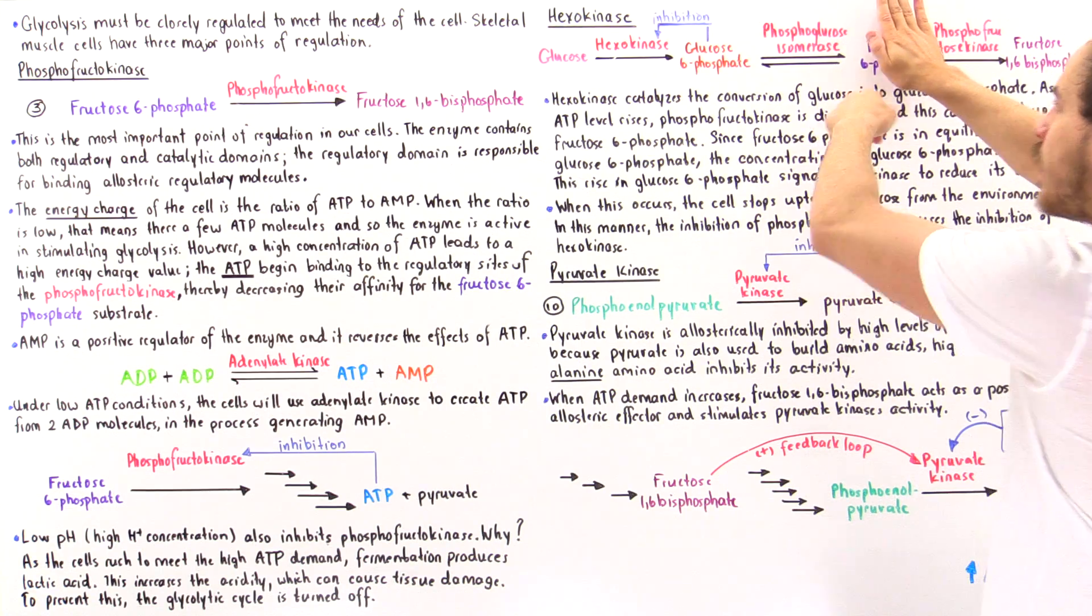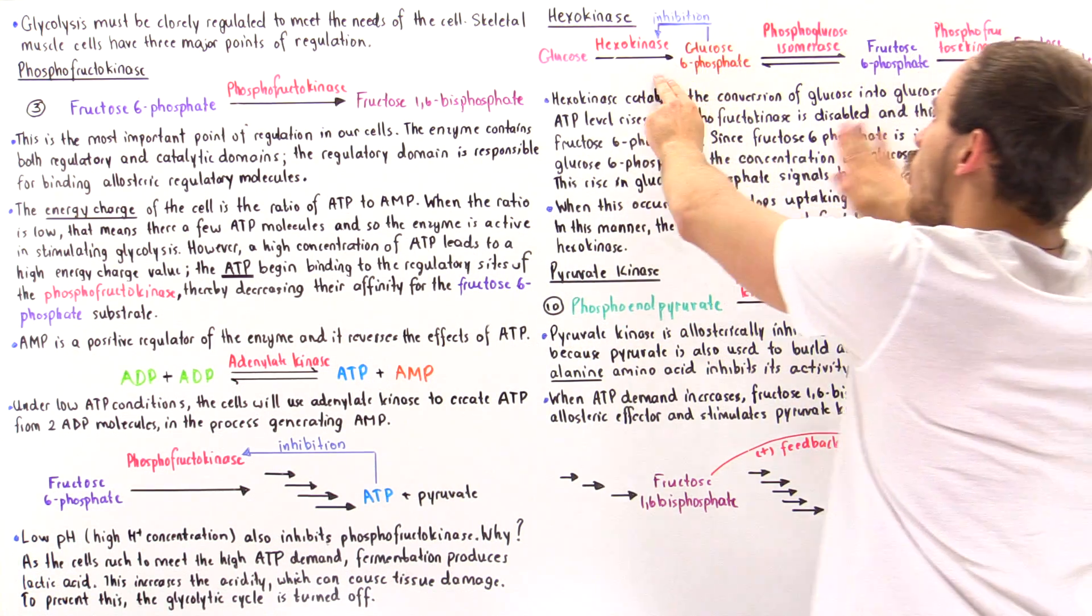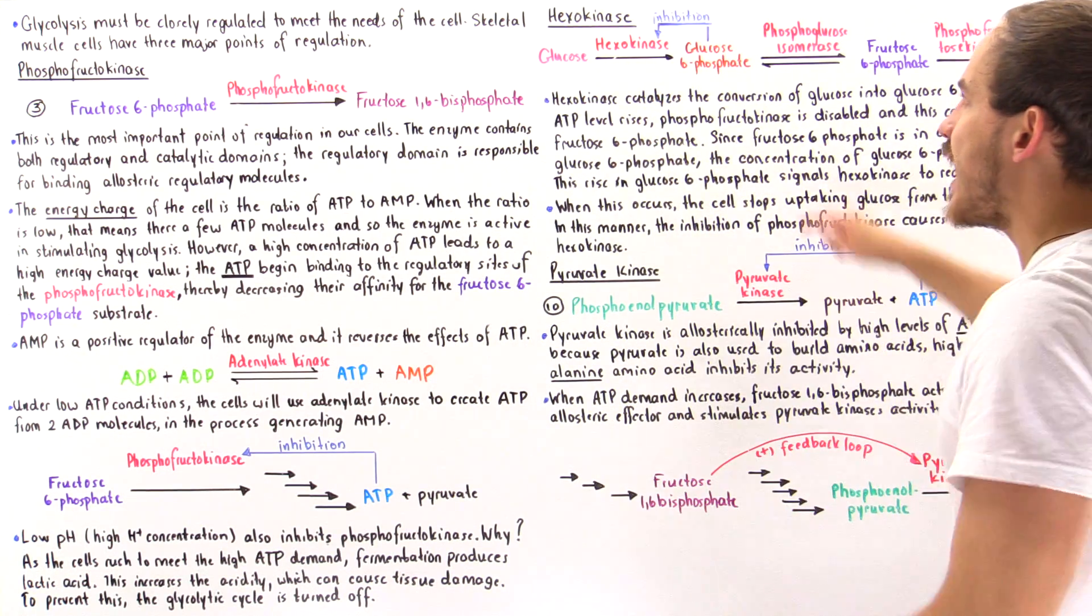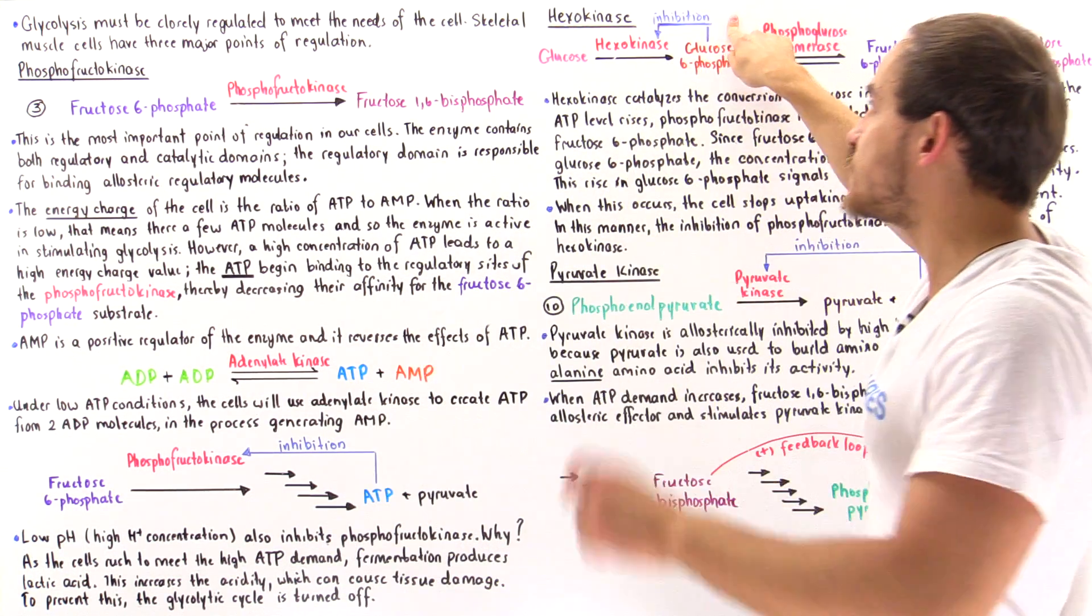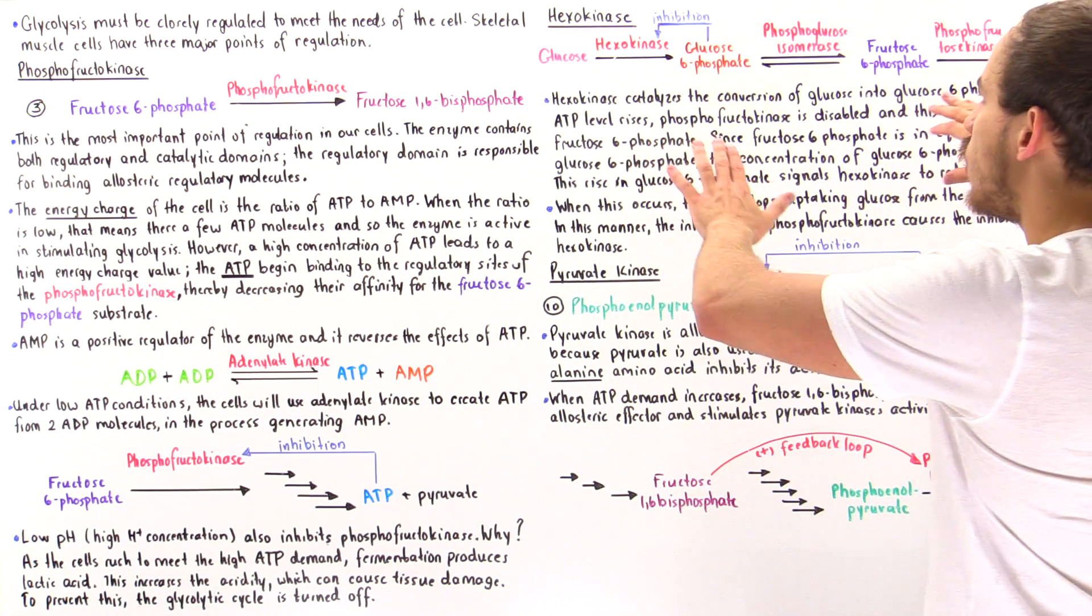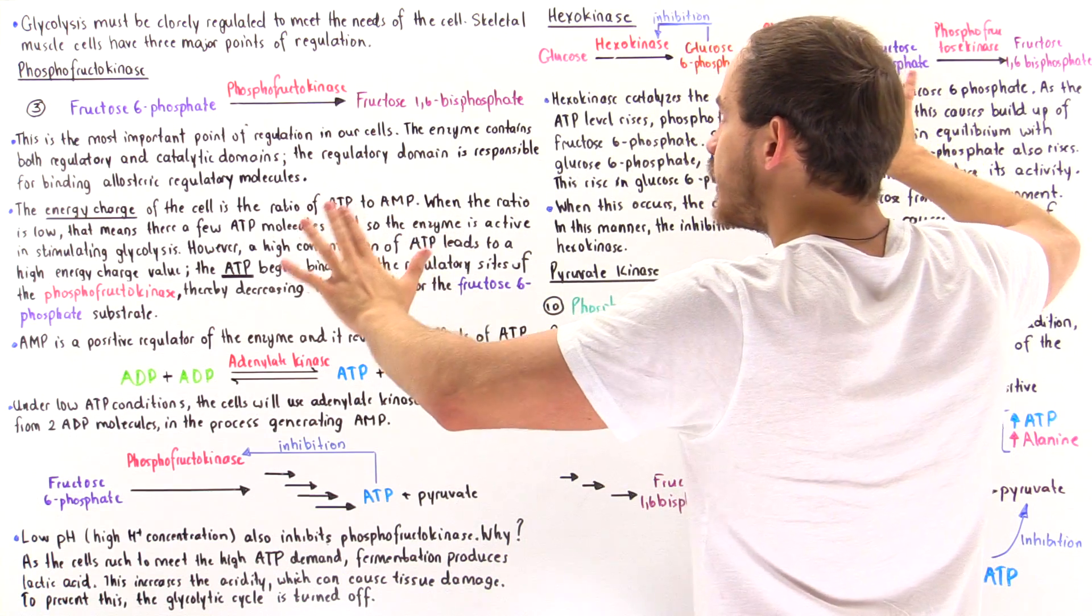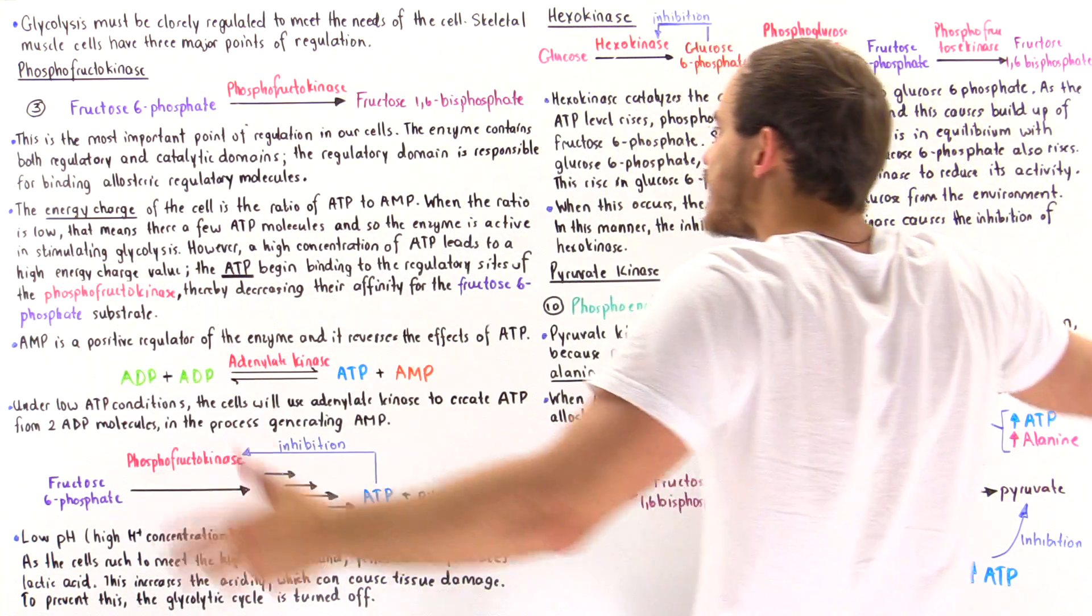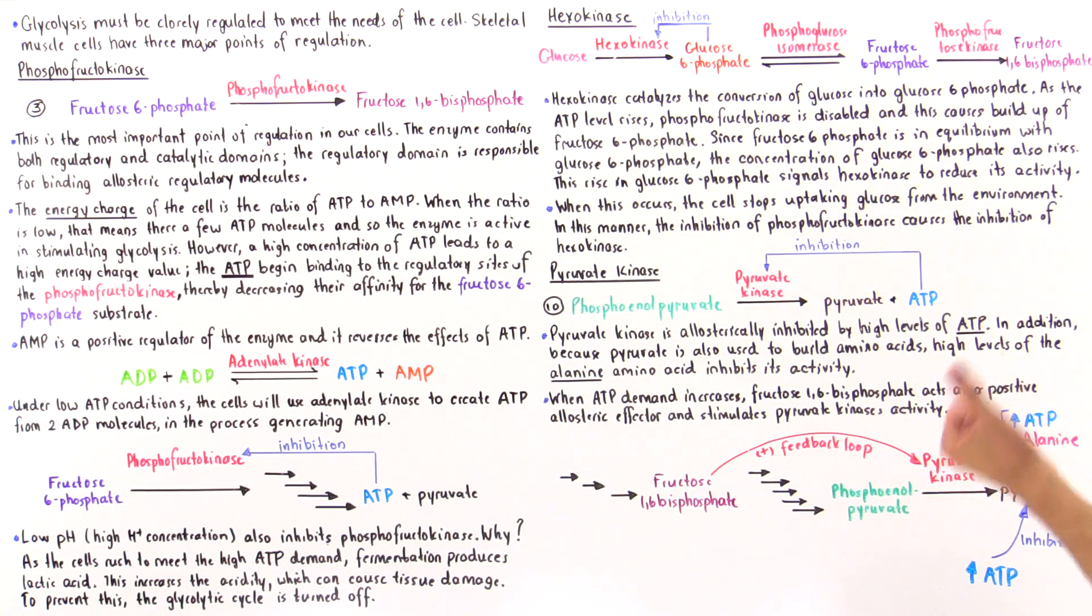And this increase by Le Chatelier's principle will cause the increase in this glucose 6-phosphate and that creates a negative feedback loop and inhibits the activity of hexokinase. Now if these two enzymes are inhibited, then these two pathways are inhibited, and that will basically turn off the process of glycolysis.